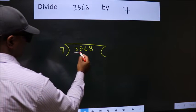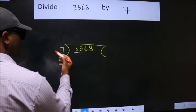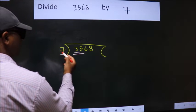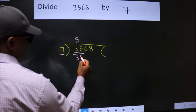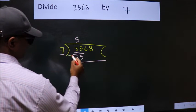Here we have 3. Here 7. 3 is smaller than 7. So we should take 2 numbers, 35. When do we get 35 in 7 table? 7 fives 35. Now we should subtract. We get 0.